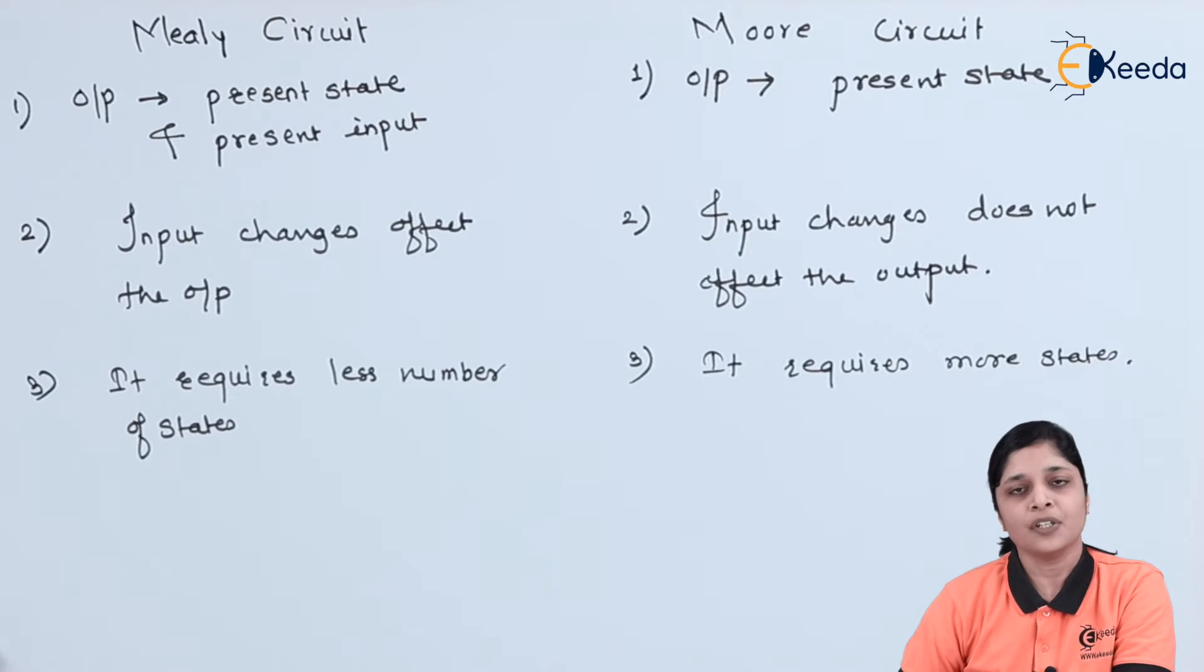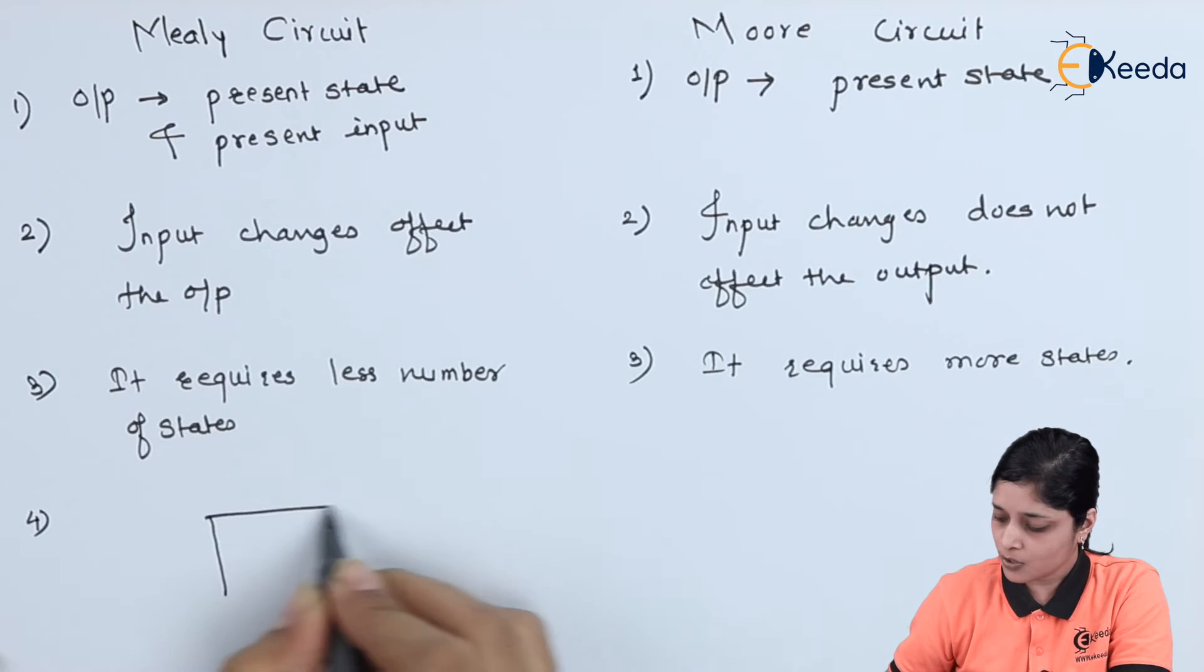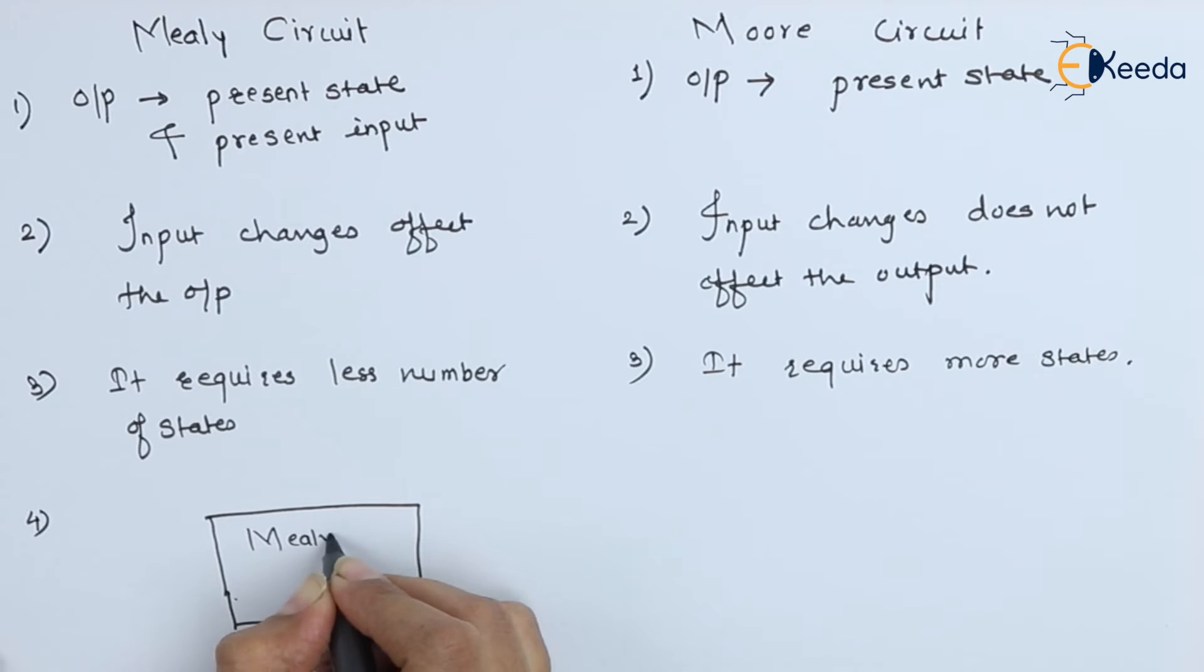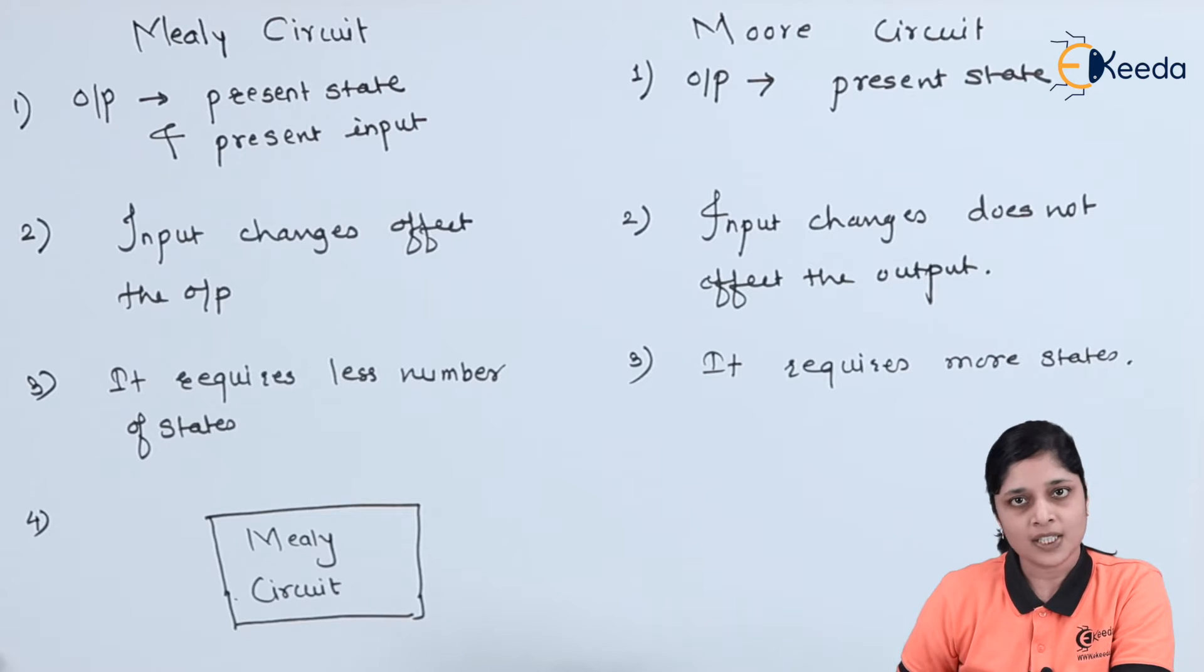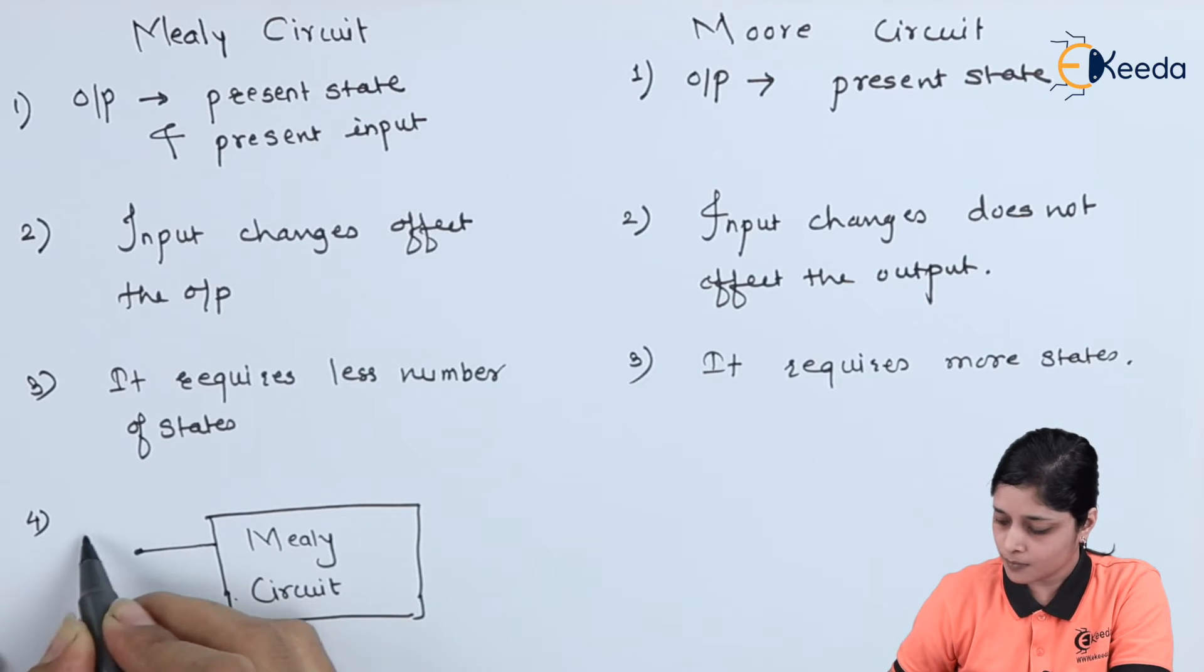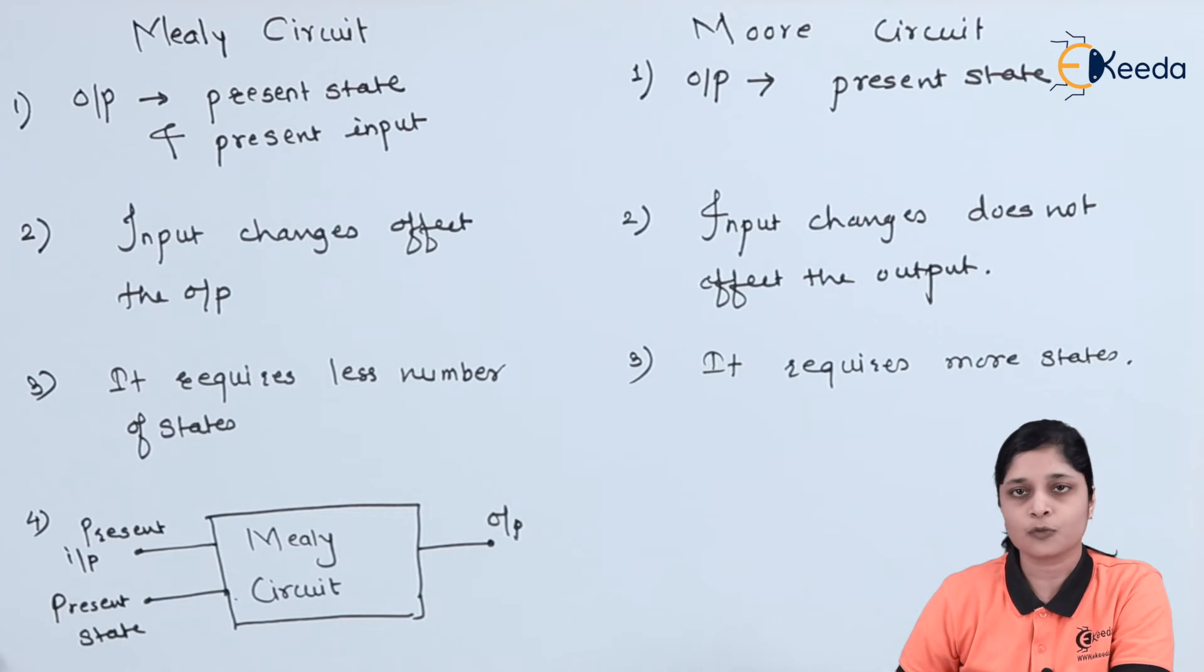Now we will draw the diagram, or you can say the block diagram for Mealy circuit and Moore circuit. Suppose this is your Mealy circuit. Now this circuit depends on what? Present - this is your input and this is your present state, and then only it will give you the output.